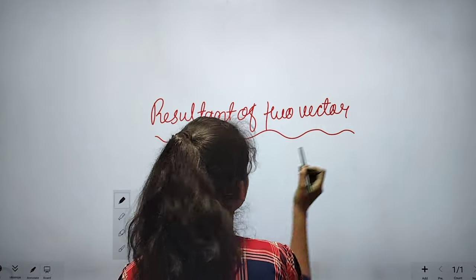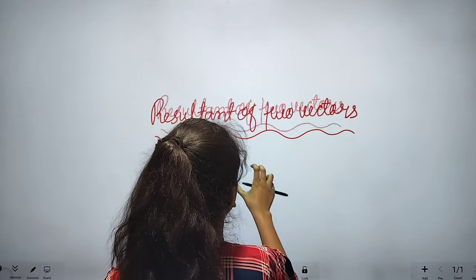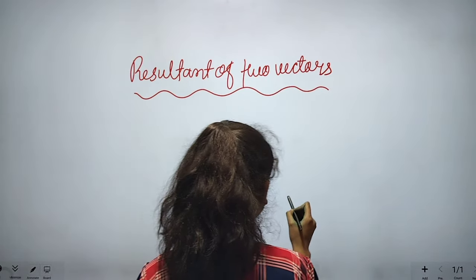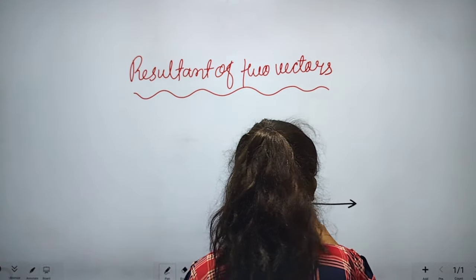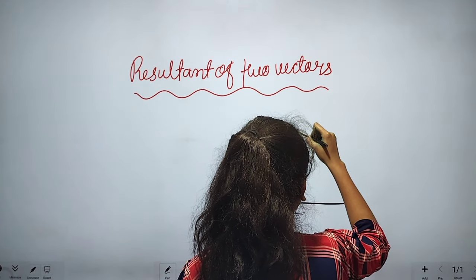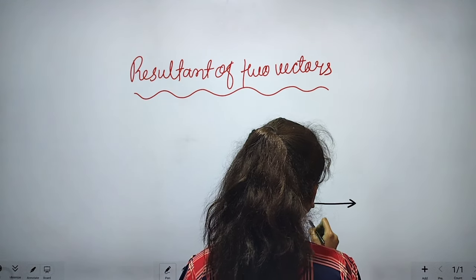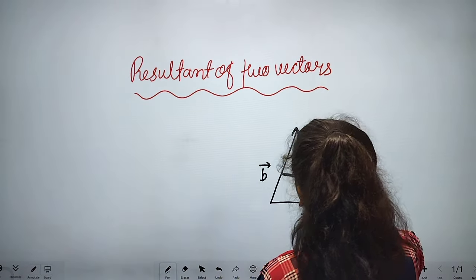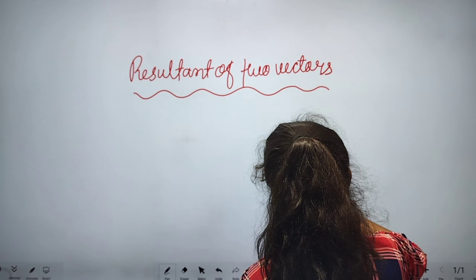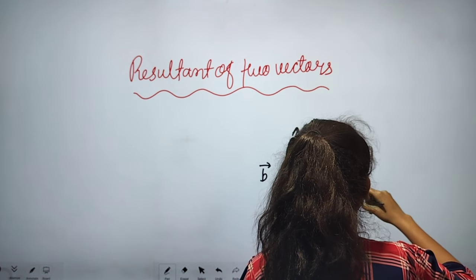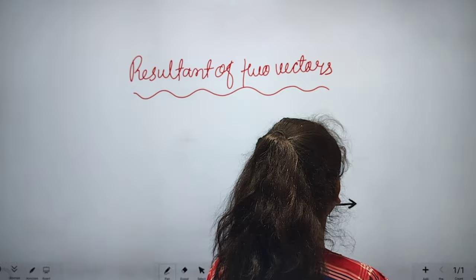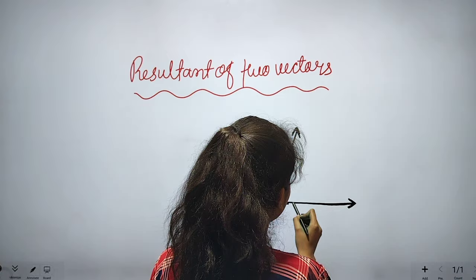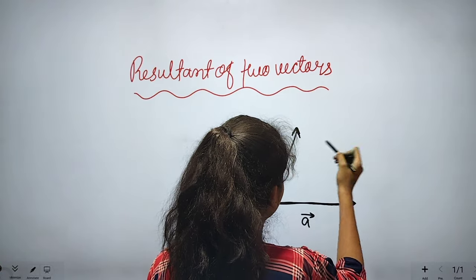Resultant of two vectors. First of all we have to draw one vector like this, and draw a second vector like this. This one is A vector and this one is B vector. For the resultant, we have to shift any vector — we have to parallel shift any vector to the parallel side. So we can see A vector shifted in this direction and B vector in this direction.